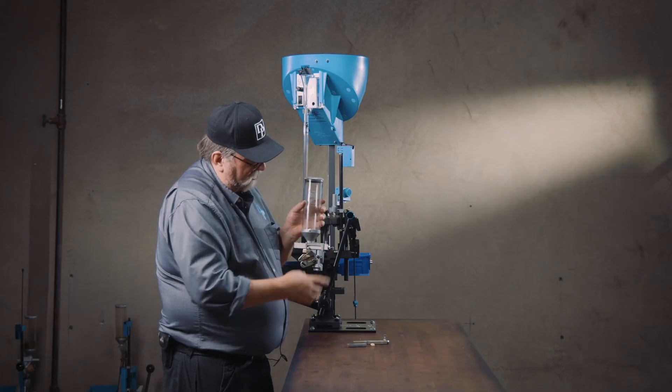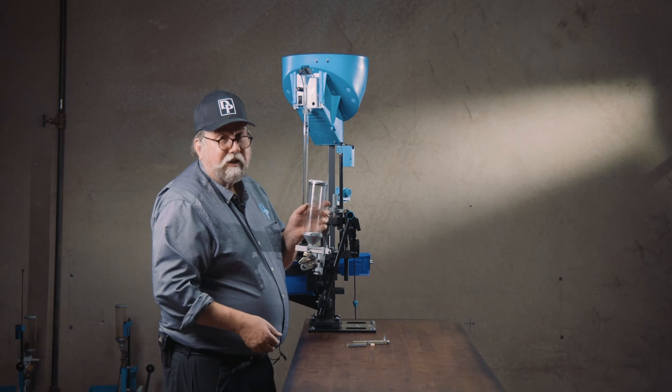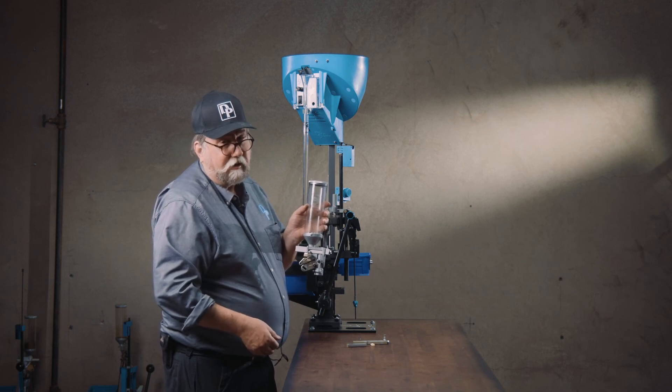Pull it down. Push it back just to test. That's it. Easy to swap out powder bars on a Dillon powder measure.